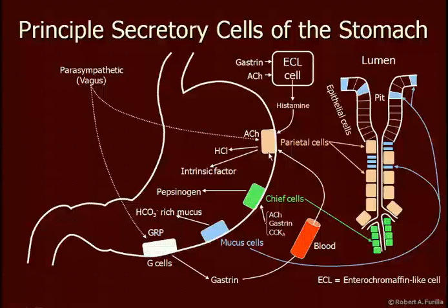The first one is called the parietal cell, and the parietal cell is responsible for secreting hydrochloric acid and a substance called intrinsic factor. Intrinsic factor is essential for the absorption of vitamin B12. Chief cells are responsible for secreting pepsinogen. Mucus cells secrete a bicarbonate-rich mucus, and G cells secrete gastrin.